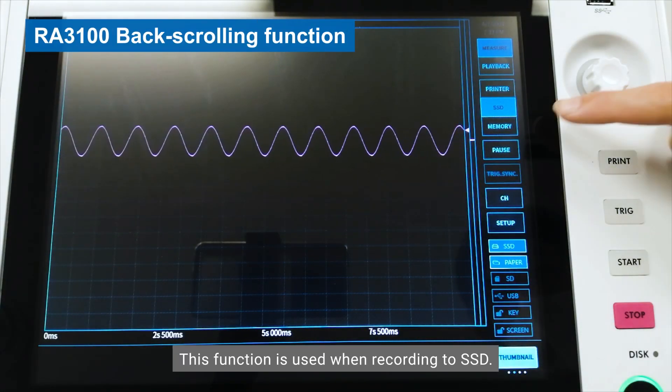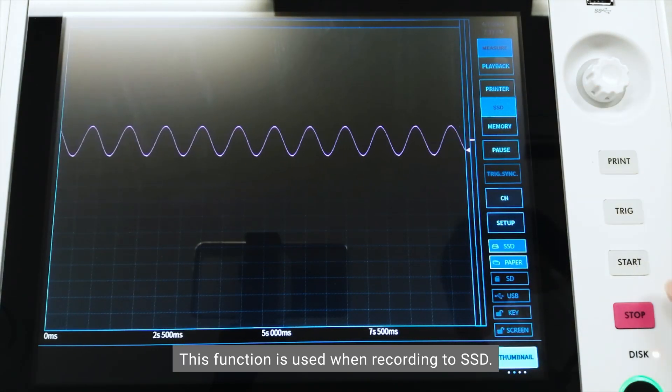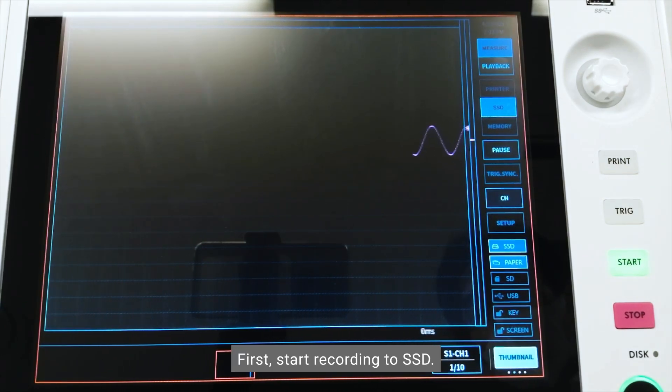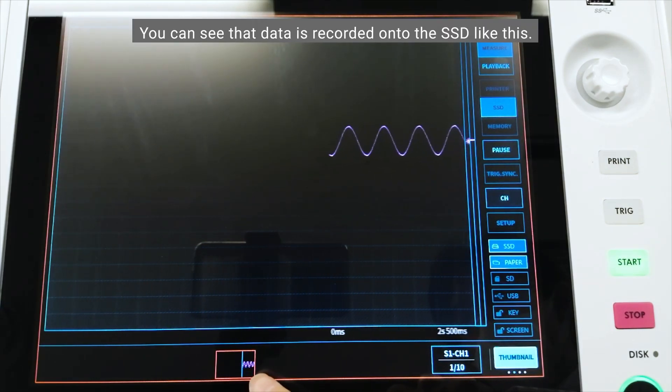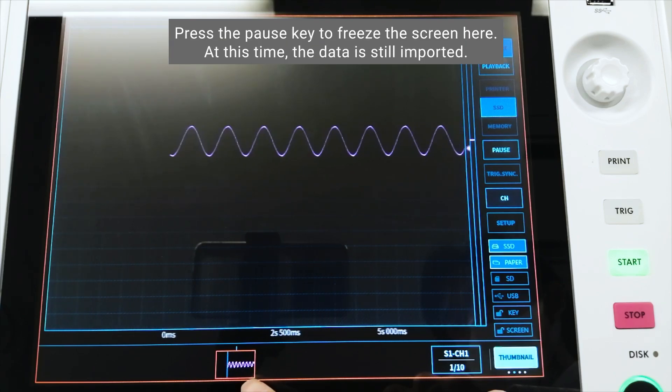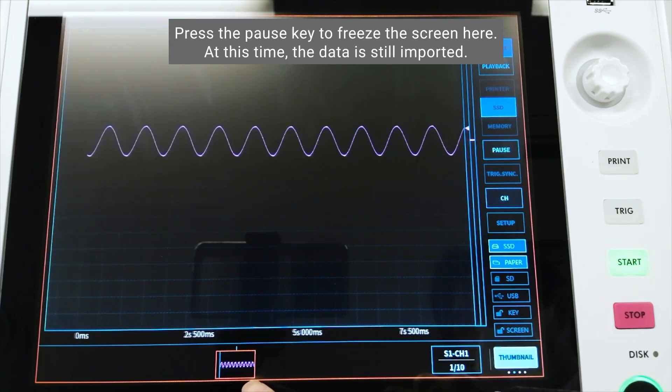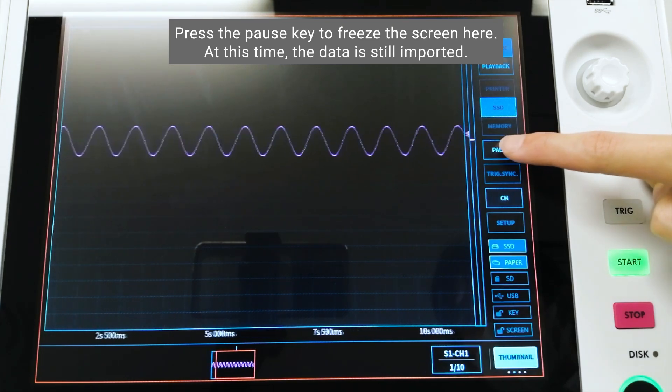This function is used when recording to SSD. First, start recording to SSD. You can see that data is recorded onto the SSD like this. Press the pause key to freeze the screen here. At this time, the data is still imported.